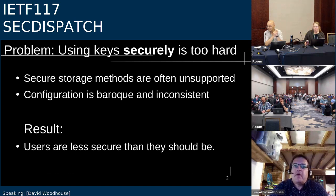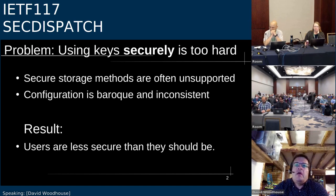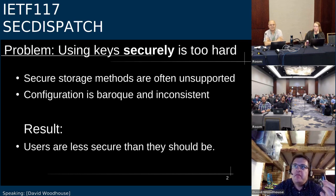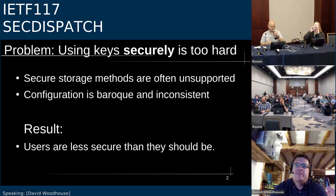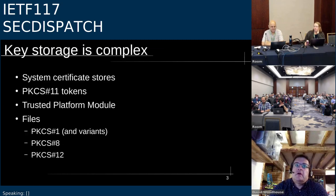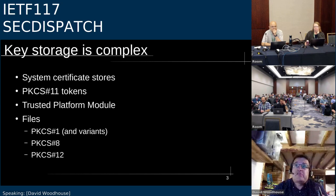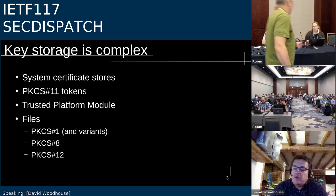Even when secure storage is supported, different applications vary on how you specify which key to use from a token. And even a given application will change how that works depending on which crypto library it happens to have been built against for your environment, for your Linux distribution or whatever. There's also system certificate stores. Most platforms these days will have their own secure or relatively secure database for key storage. There's PKCS11 used for accessing crypto tokens, the TPM of course, and then a plethora of different file formats which can be either PEM text format or DER binary.